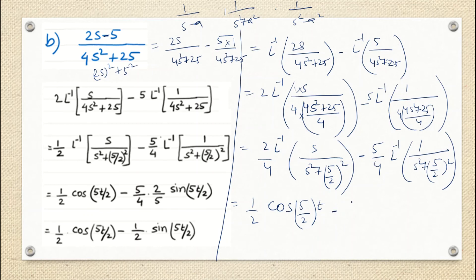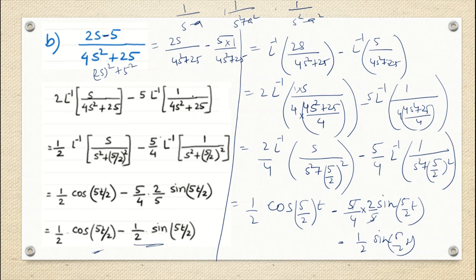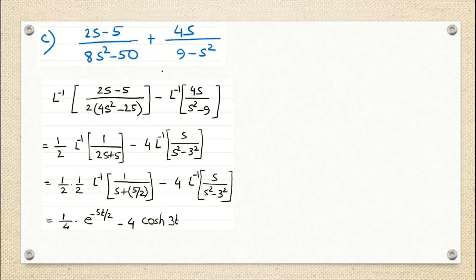For the second term 5/(4s² + 25): factor out 5, divide denominator by 4, multiply outside by 1/4, giving (5/4)·L⁻¹{1/(s² + (5/2)²)}. Using L⁻¹{1/(s² + a²)} = sin(at)/a with a = 5/2, this gives (5/4)·sin(5t/2)·(2/5) = (1/2)·sin(5t/2). The full answer is (1/2)·cos(5t/2) − (1/2)·sin(5t/2).